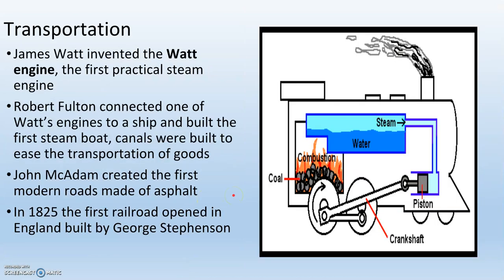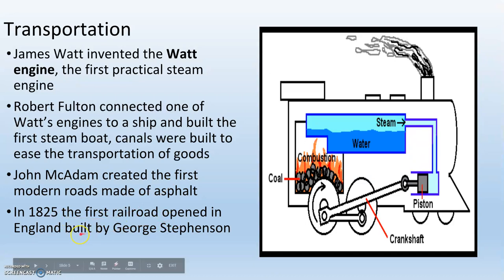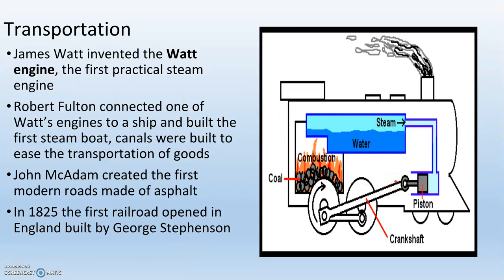The Industrial Revolution has a huge impact on transportation technology. James Watt invents the Watt engine, which is the first practical steam engine. Robert Fulton then connects the Watt engine to a ship, creating the first steamboat — just a ship with a Watt engine attached. John McAdam creates the first modern roads made of asphalt, which becomes important when we get automobiles. And in 1825, the first railroad is opened by George Stevenson in England. We can see a Watt engine attached to a locomotive — the front car of a train. You've got a coal box where the coal is kept, and you light that on fire.